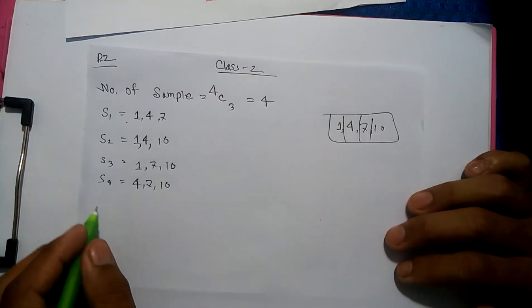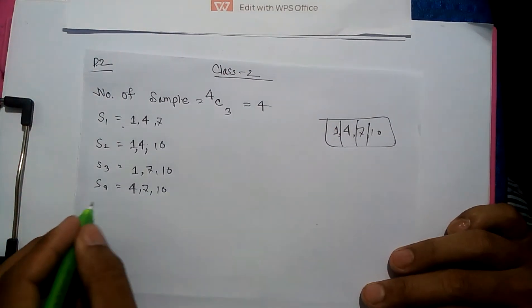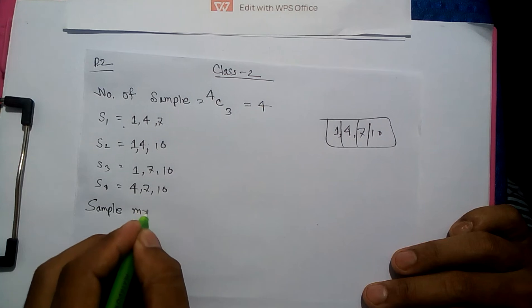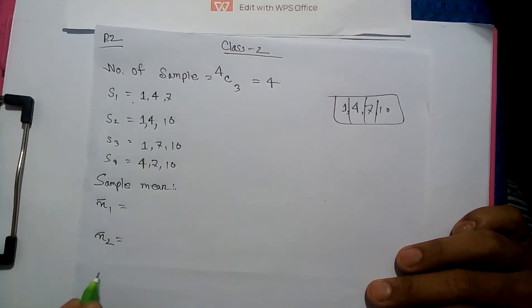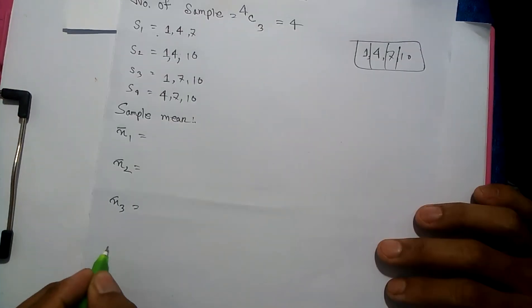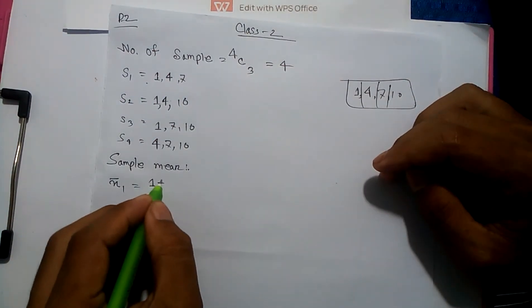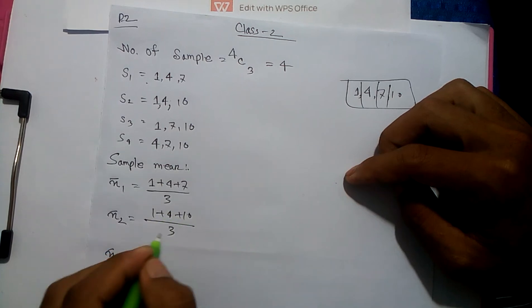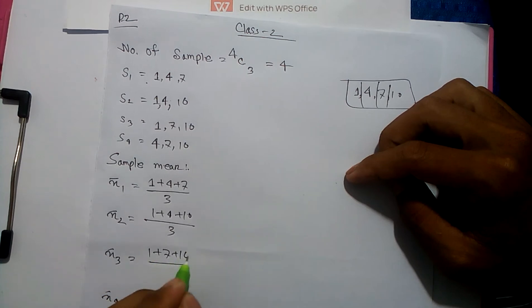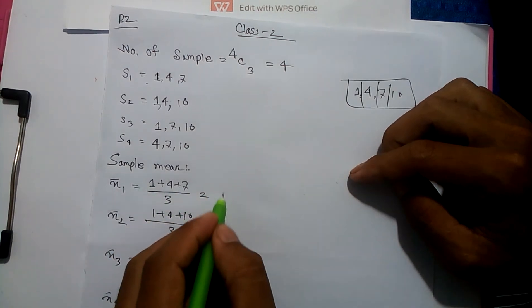Let's calculate the sample means. For S1, x̄₁ = (1+4+7)/3. For S2, x̄₂ = (1+4+10)/3. For S3, x̄₃ = (1+7+10)/3. And for S4, x̄₄ = (4+7+10)/3. Now I'll do the calculations.